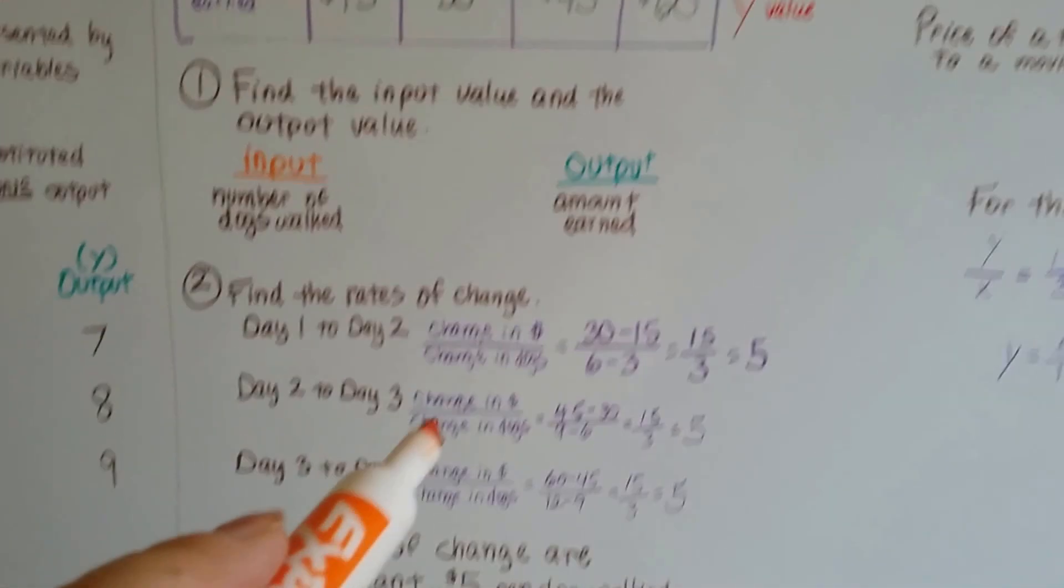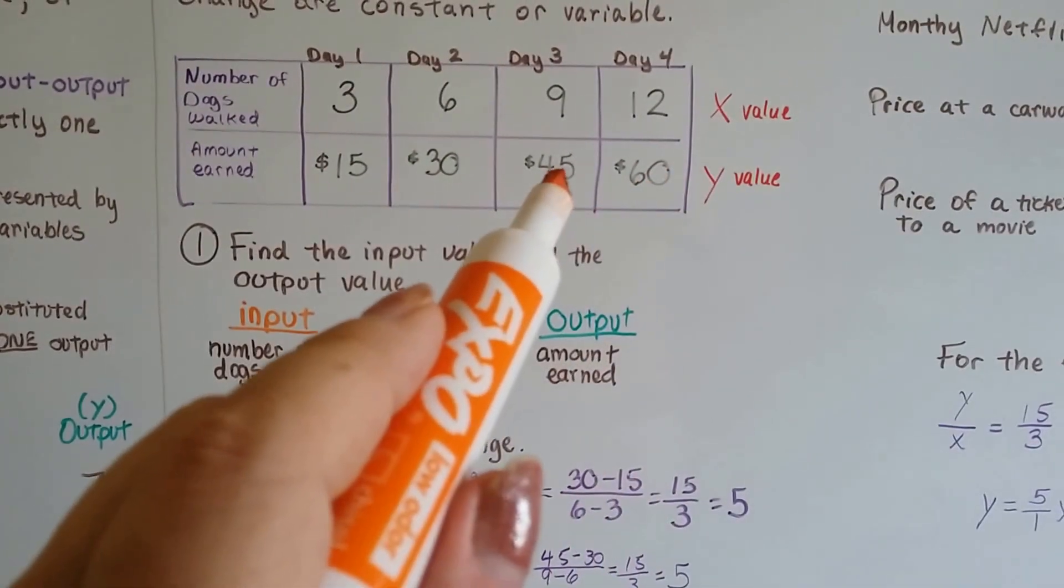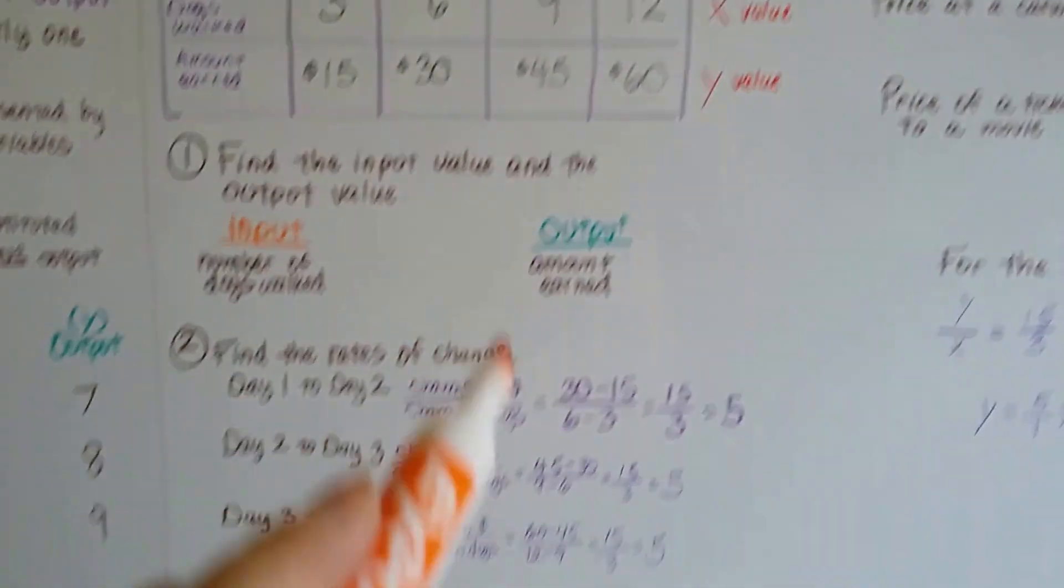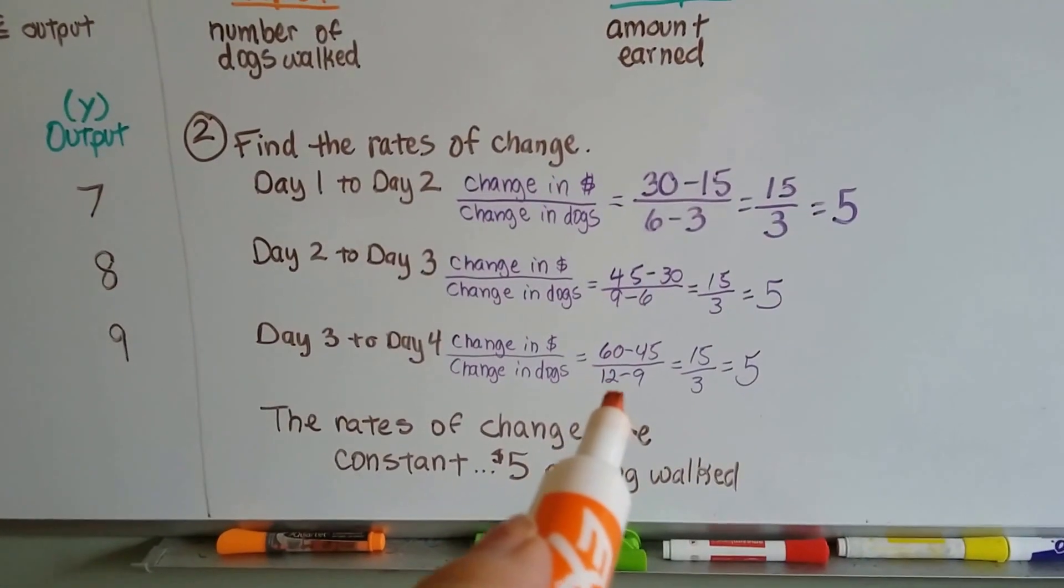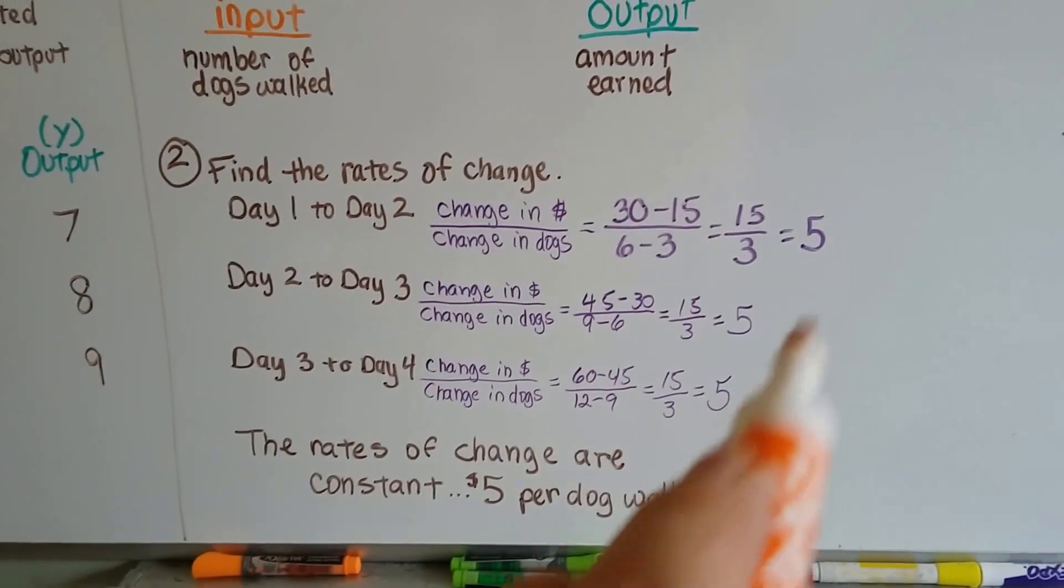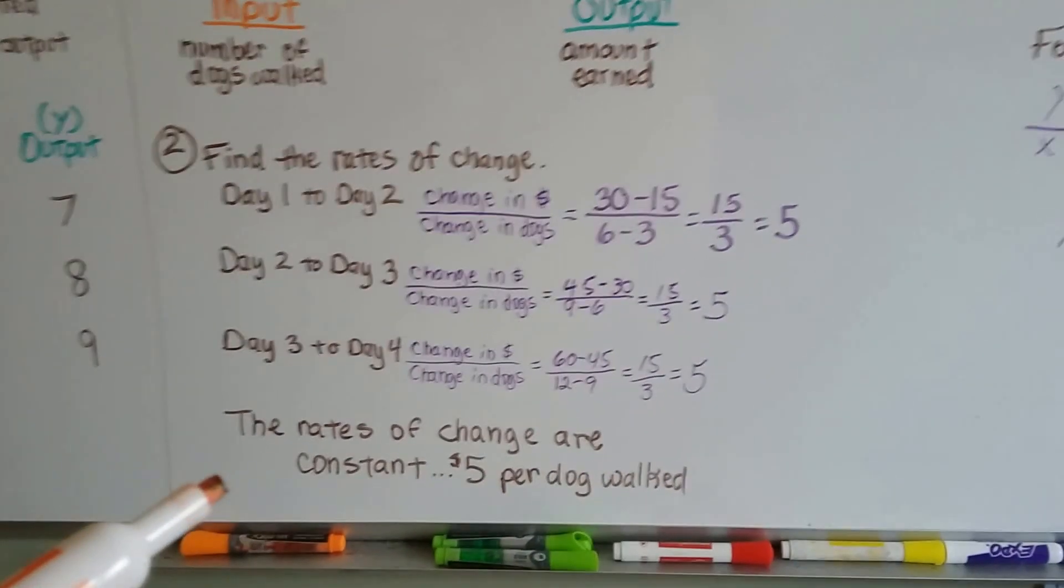Now we look at day 3 to day 4. Well, day 4 has got 60, and day 3 has got 45. So we've got 60 minus 45 over 12 minus 9. Well, 60 minus 45 is 15, and 12 minus 9 is 3. It's 5 again. The rates of change are all 5, so the rates of change are constant.